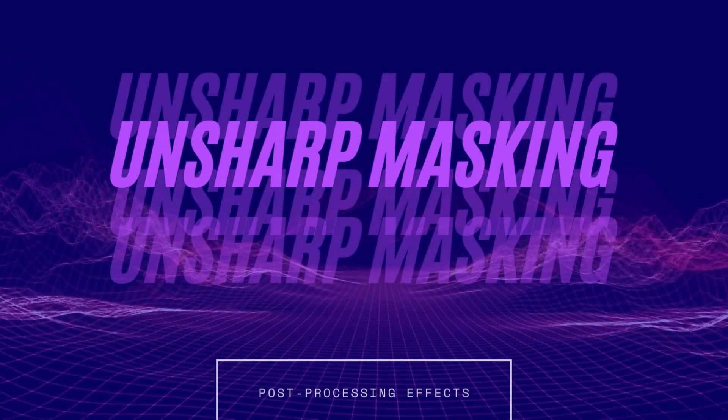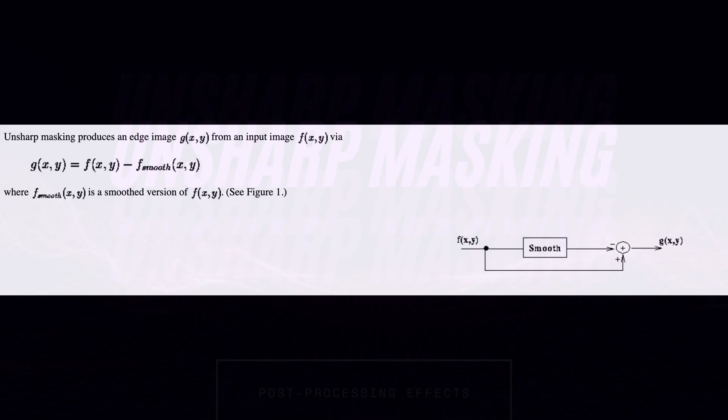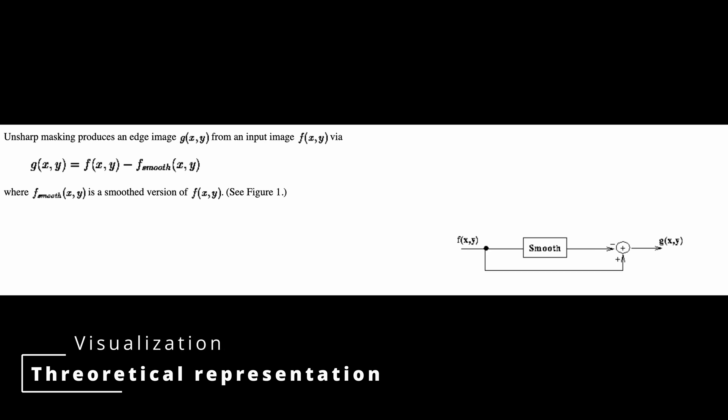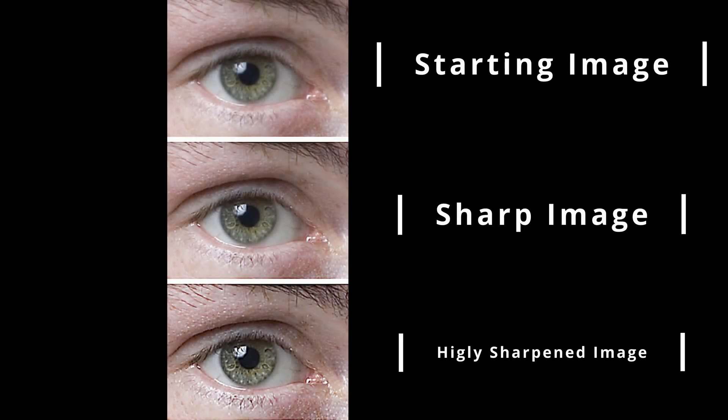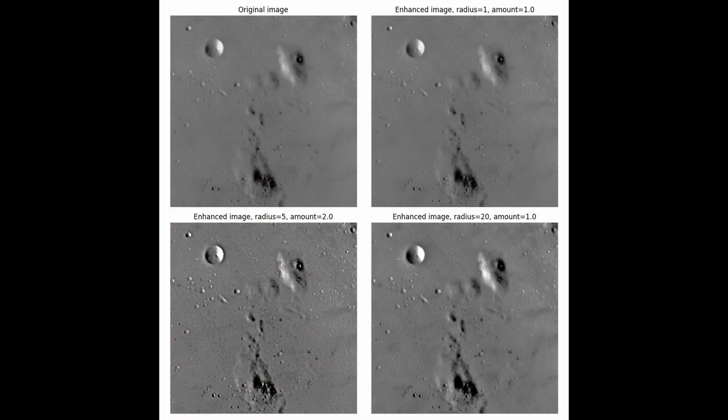The unsharp masking technique - the name might trick you - is a handy technique, not properly a filter, to sharpen an image. The filter is simple to master once you understand the basics of blurring. We aim to sharpen the image.